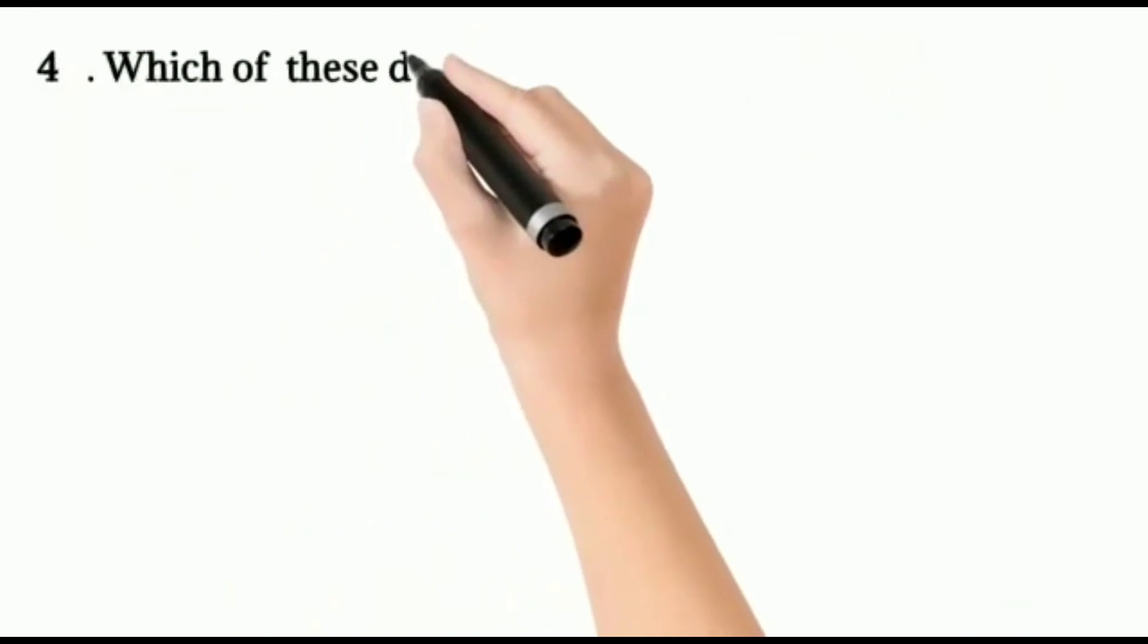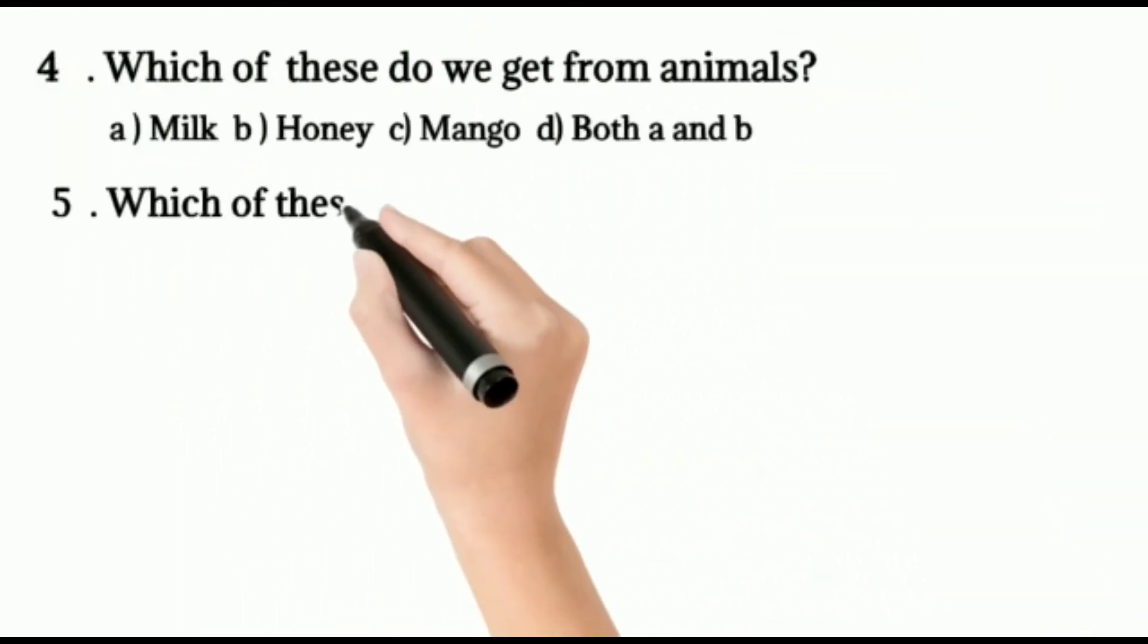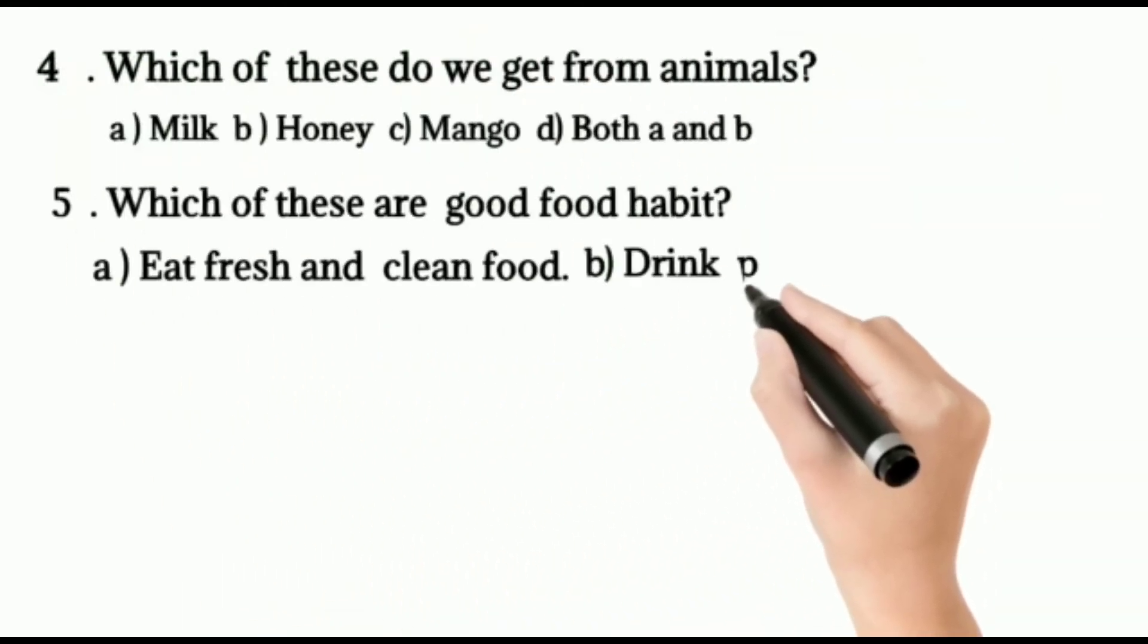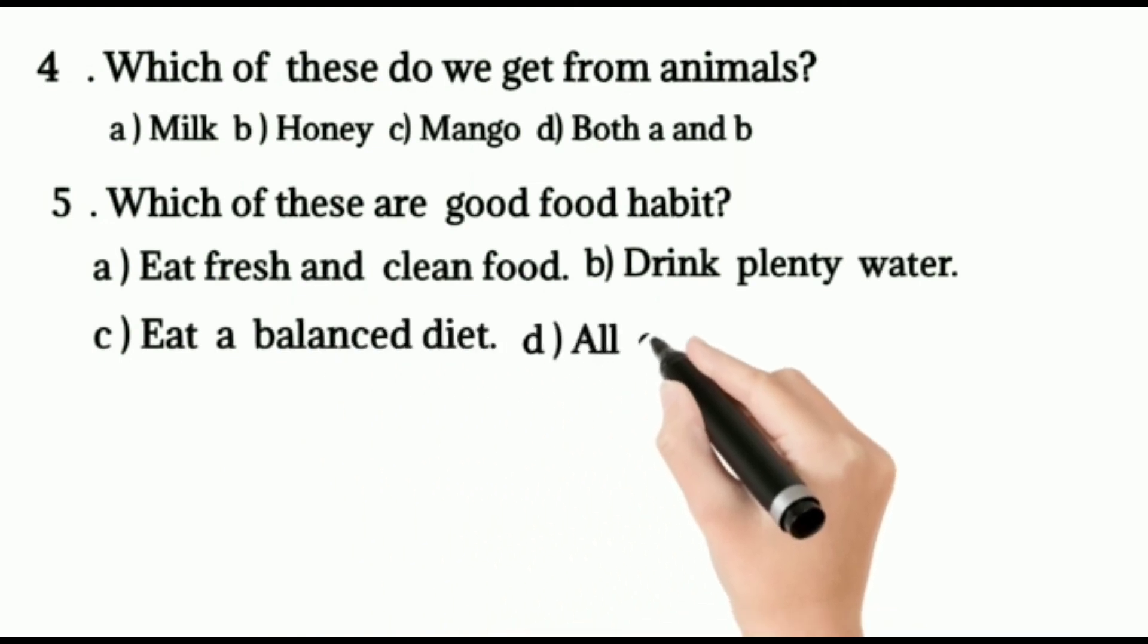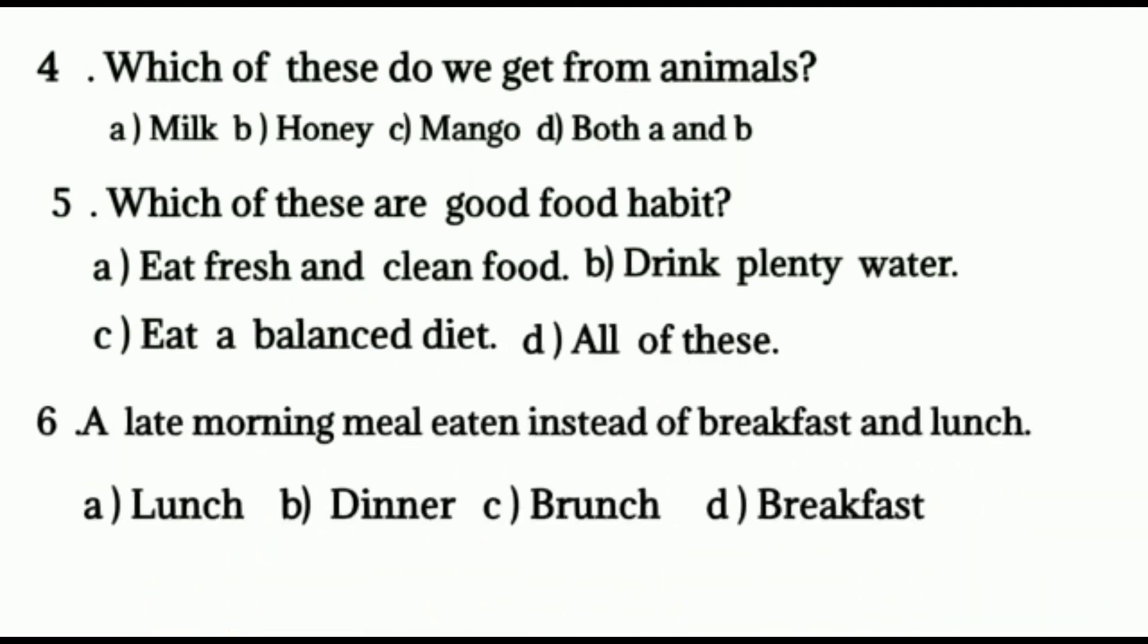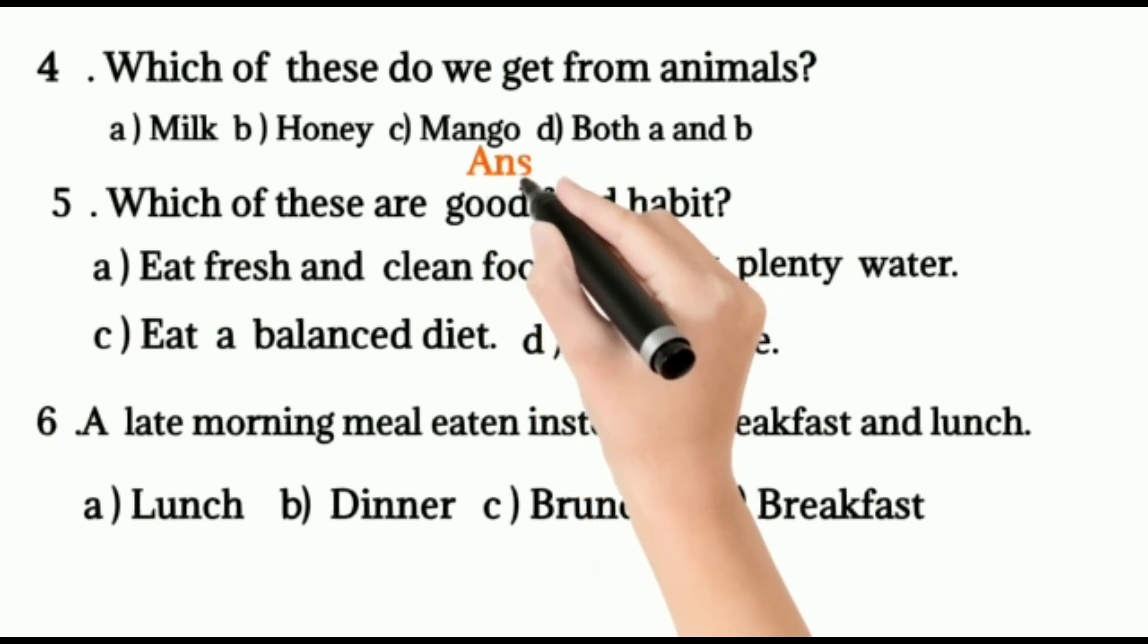Four, which of these do we get from animals? Milk, honey, mango, D. Both A and B. We get milk and honey from animals. Honey we get from honey bees. So, answer is D.